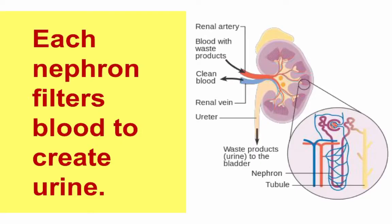Your strategy is to focus on what's coming in to the glomerular capsule and what's going out, tracing to the peritubular capillaries. The nephron filters blood and creates urine in the process. Blood coming from the heart is high in oxygen but also high in waste products. Blood that leaves the kidney is clean, meaning low in waste products, but also lower in oxygen.